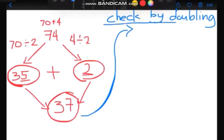Let me write the line. Now we are going to write 37, and then partition this 37 into 30 plus 7.